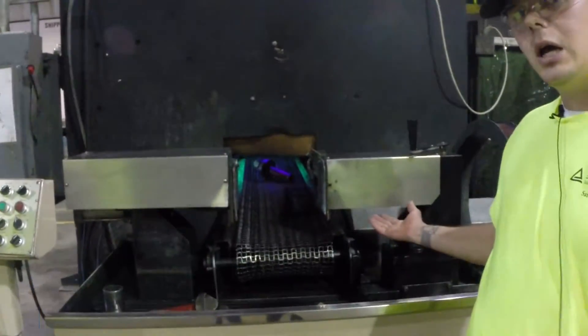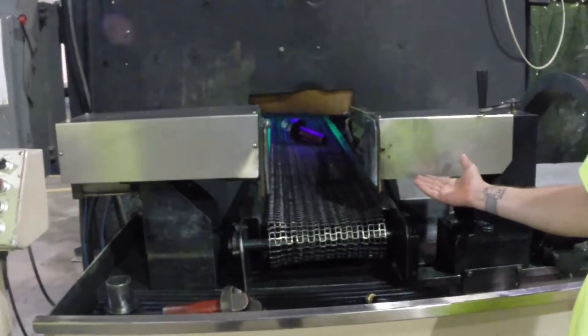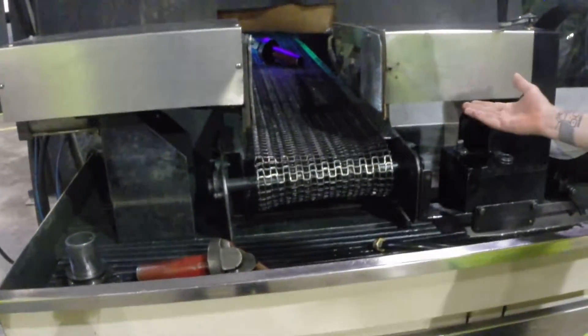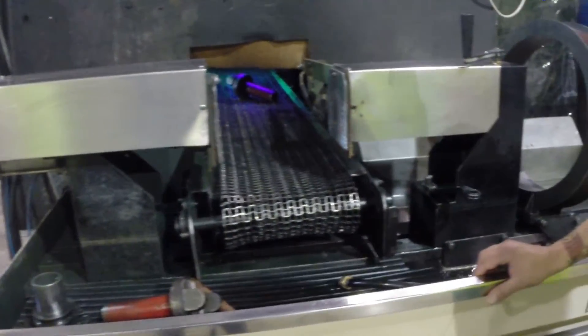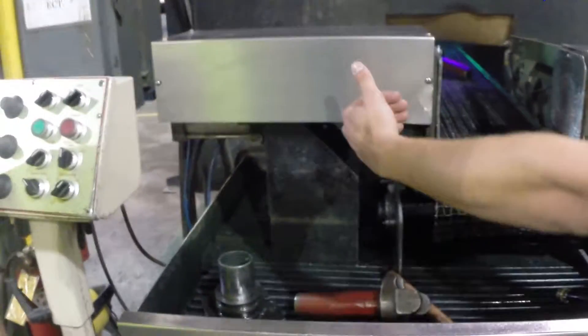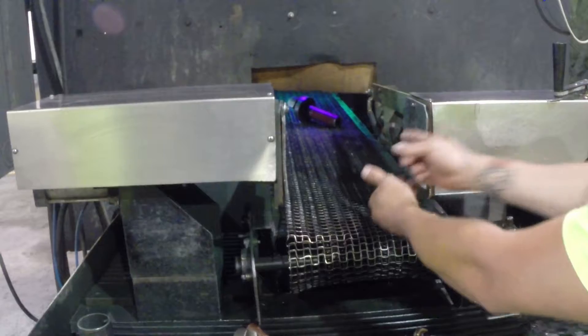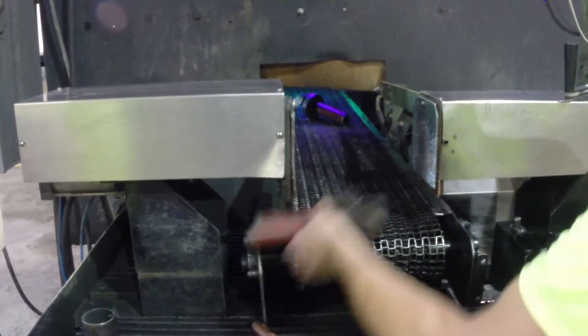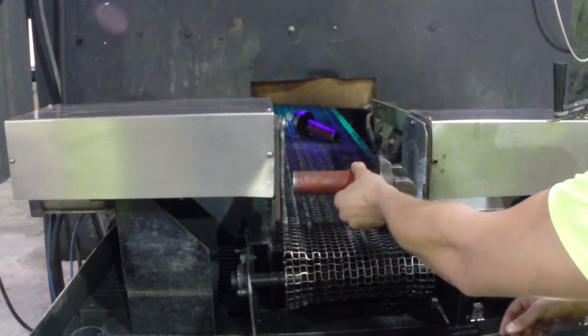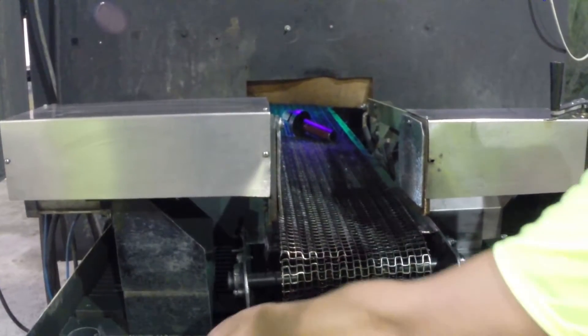Today we're showing how we would use magnetic particle inspection in a wet bench situation. We have here two headstocks which induce a current, what we call a headshot this way, in a field this way into a part, looking for indications at the surface or close to the surface.